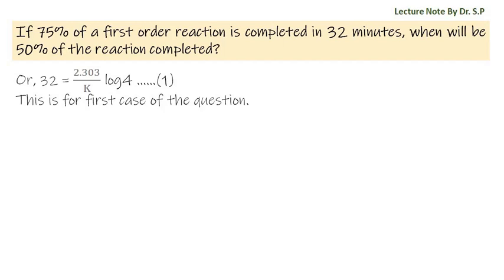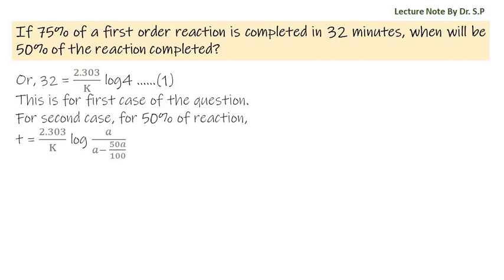This is for the first case of the question. For the second case, for 50% of the reaction, T is equal to 2.303 by k times log A by (A minus 50A by 100). On solving this equation we get T is equal to 2.303 by k times log 2. Let us consider this as equation 2.